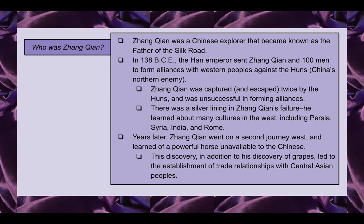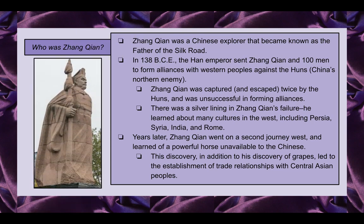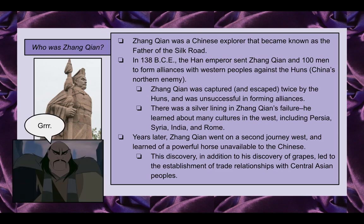So who was Zhang Jian? Zhang Jian was a Chinese explorer who became known as the father of the Silk Road. In 138 BCE, the Han Emperor sent Zhang Jian and 100 men to form alliances with western peoples against the Huns, who were China's northern enemy. Zhang Jian was captured and escaped twice by the Huns and was unsuccessful in forming alliances. But there was a silver lining: he learned about many cultures in the west, including Persia, Syria, India, and Rome.